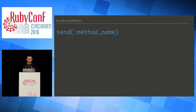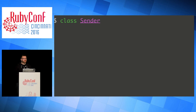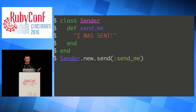First up is Send. Send is an extremely powerful tool — it is one method to call them all. Send will invoke a method using a symbol or a string of the method name. It also lets you call any method. If you've ever heard that in Ruby there's no such thing as private methods, it's because you can use Send to call anything. We'll define a method called SendMe, it'll let us know it was sent, create a new instance of our sender, send SendMe, and we'll see that it was sent. If that method name were a variable that we didn't know, we can call methods we didn't know about.